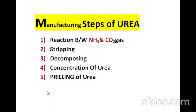In the production process of urea, the following manufacturing steps are involved: reaction between NH3 and CO2 gas, stripping process, decomposing process, concentration of urea using evaporators, and prilling of urea — which means converting a liquid solution into solid grains.